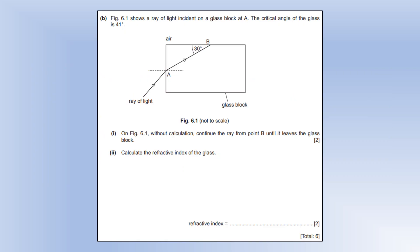The diagram shows a ray of light incident on glass at A. The critical angle of the glass is 41 degrees. Without calculation, continue the ray. The angle of incidence here is 60 degrees, that's the angle to the normal, so that's greater than the critical angle. So you're going to get reflection. And at the next boundary, we're going to get it being refracted there because that one's at an angle of incidence of 30 degrees, so it's just going to be refracted.